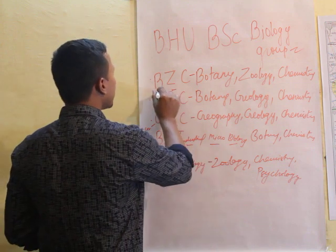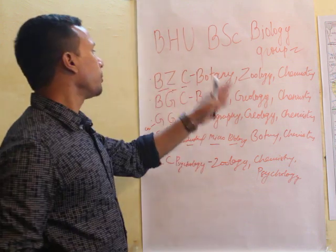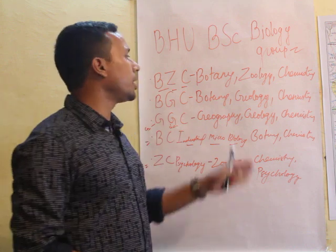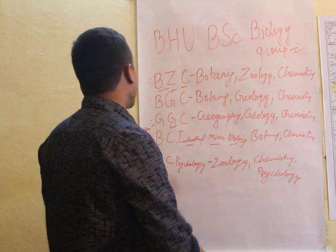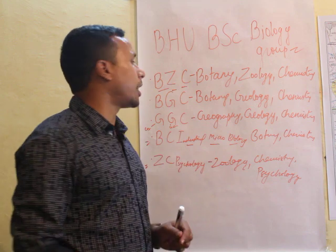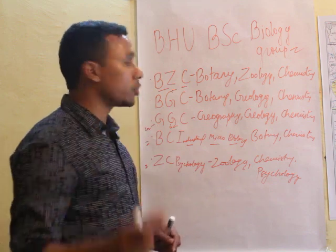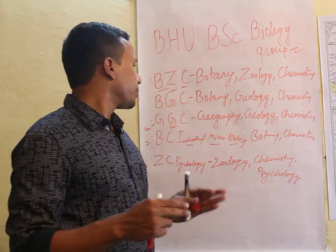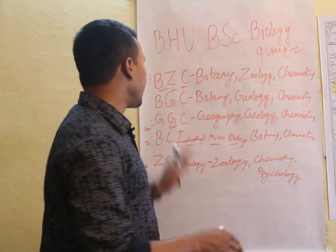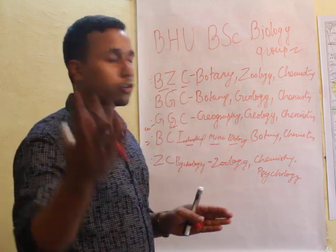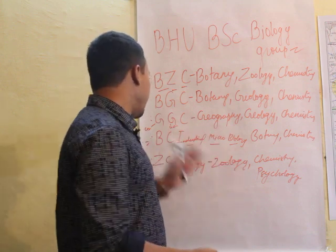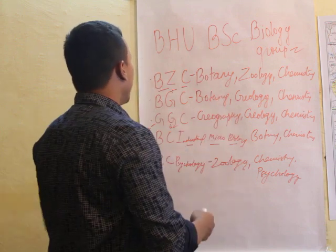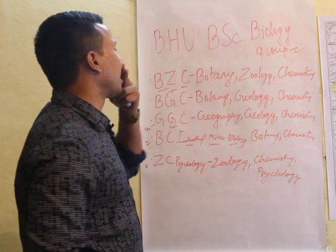Now let me revise all the groups for you. The first is BZC — Botany, Zoology, Chemistry. The second is BGC — Botany, Geology, Chemistry. The third is GGC — Geography, Geology, Chemistry. The fourth is BCI — Botany, Chemistry, and Industrial Microbiology. The fifth is ZCP — Zoology, Chemistry, and Psychology. These are all five groups under BSC Biology Group.